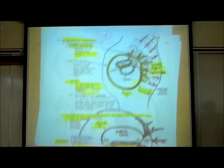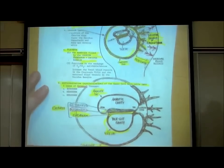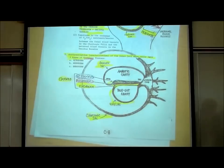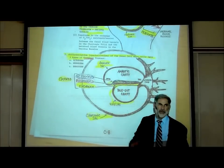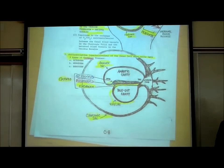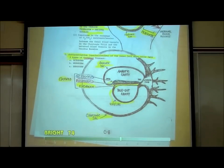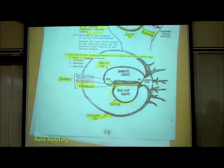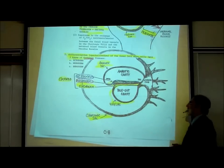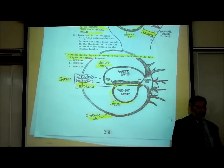The second major thing that happens in the second week is that the layer of cells that will become the baby divides into three layers: an ectoderm, mesoderm, and endoderm — a top, middle, and bottom layer. We've been learning what each of these three germinal layers will grow into.